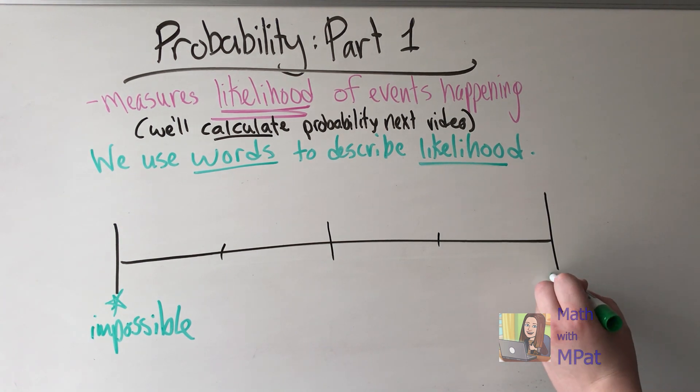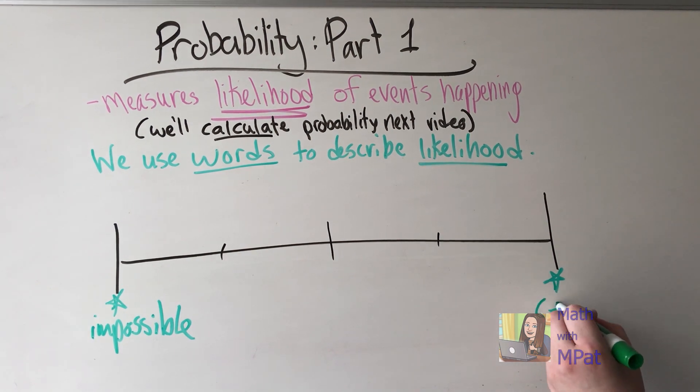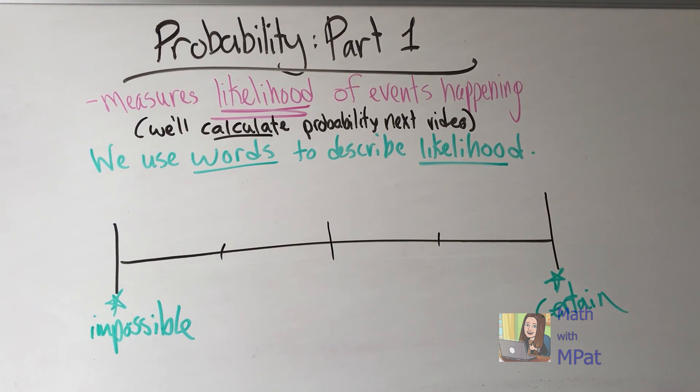Over here on the opposite side of the spectrum, the opposite to impossible, we call certain. Here we're telling you that this event is definitely going to happen. So if today is Monday, then it is certain that tomorrow will be Tuesday.